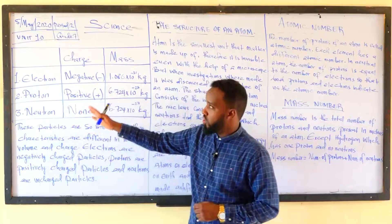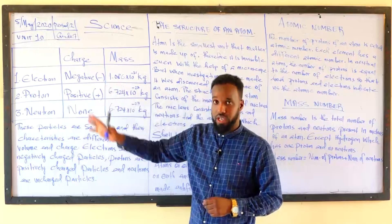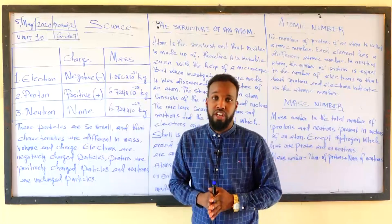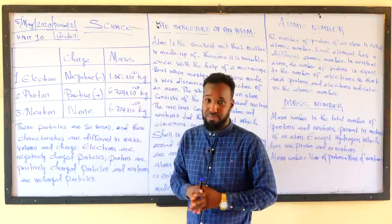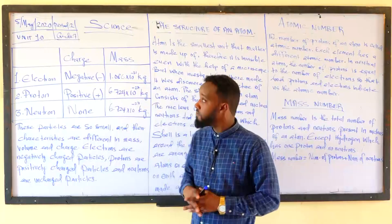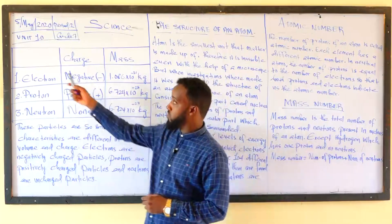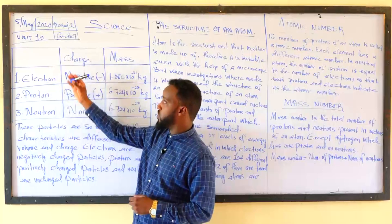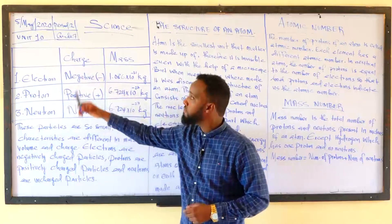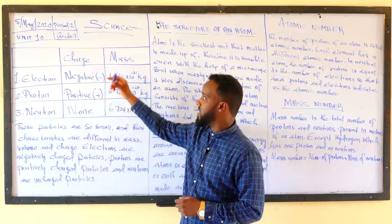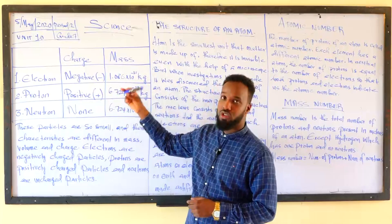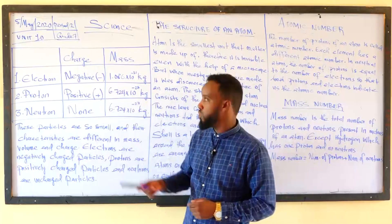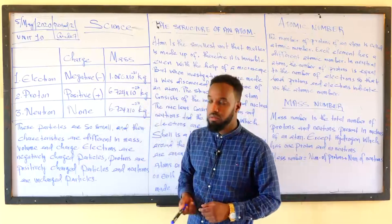The charge can be positive or negative, and each particle has a mass. The electron has a negative charge. The mass of the electron is 9.086 times 10 to the power of minus 31 kg.